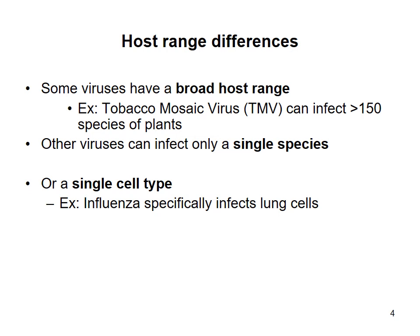When it comes to host range, some viruses can have a very broad range. The TMV virus, which stands for the tobacco mosaic virus, can infect a wide variety of plants. Whereas there are viruses that are very specific and will only target one single species or even one single cell type. Influenza, which most of us call the seasonal flu, tends to be specifically aimed at lung cells, thereby causing a lot of the respiratory issues we associate with it clinically.